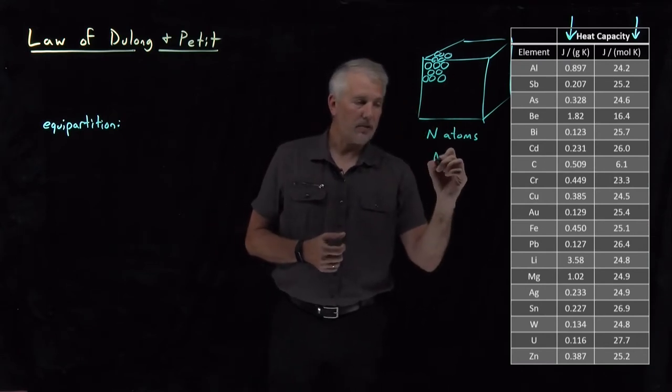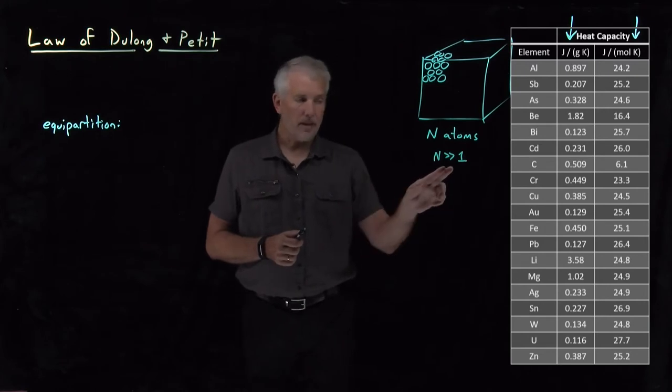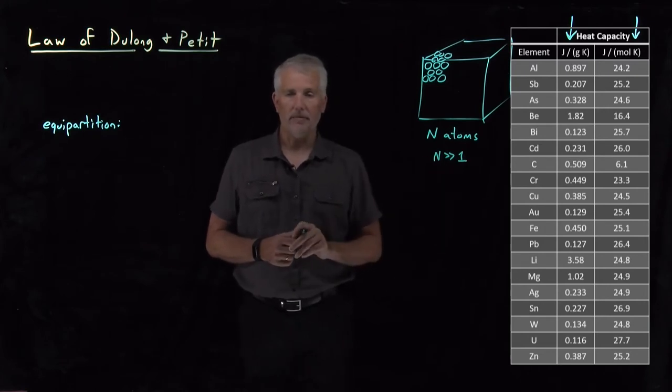So if it's a macroscopic chunk of this metal, the number of atoms we're talking about is Avogadro's number or so, many, many, many more than just a handful of atoms.